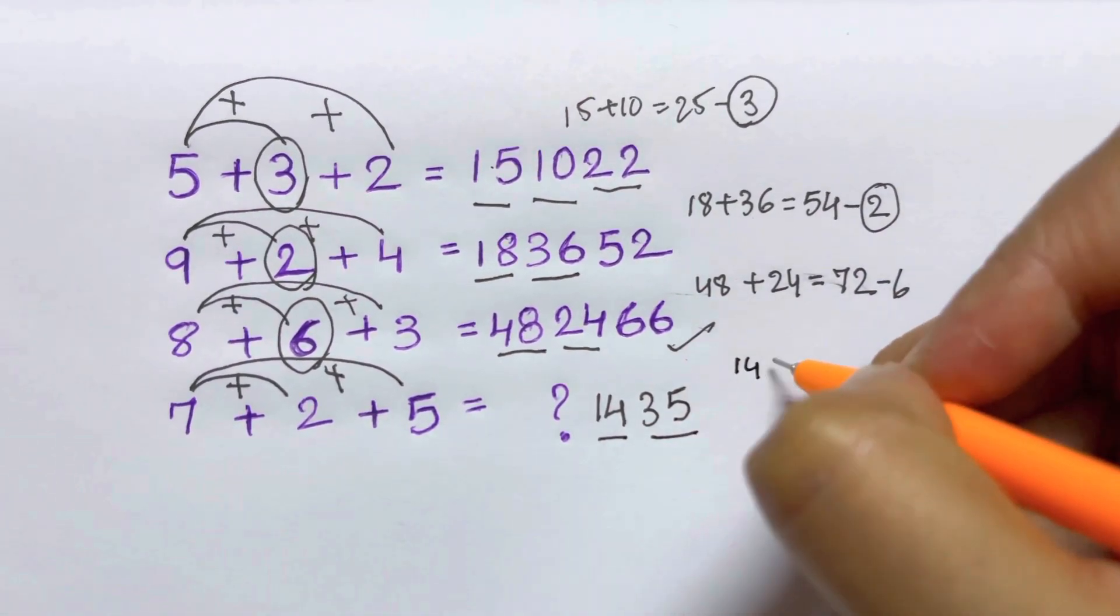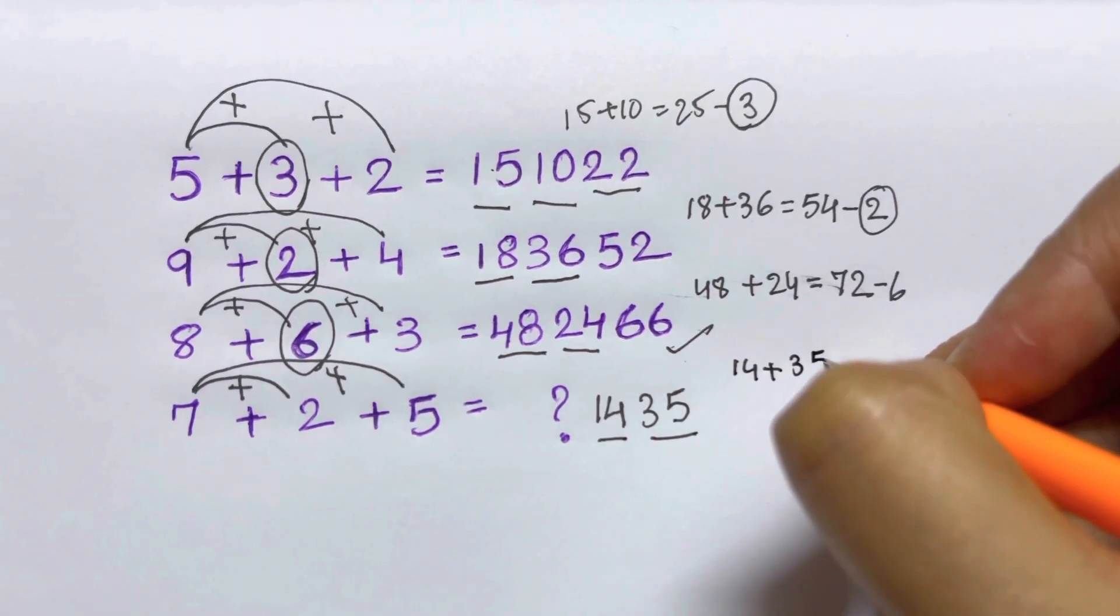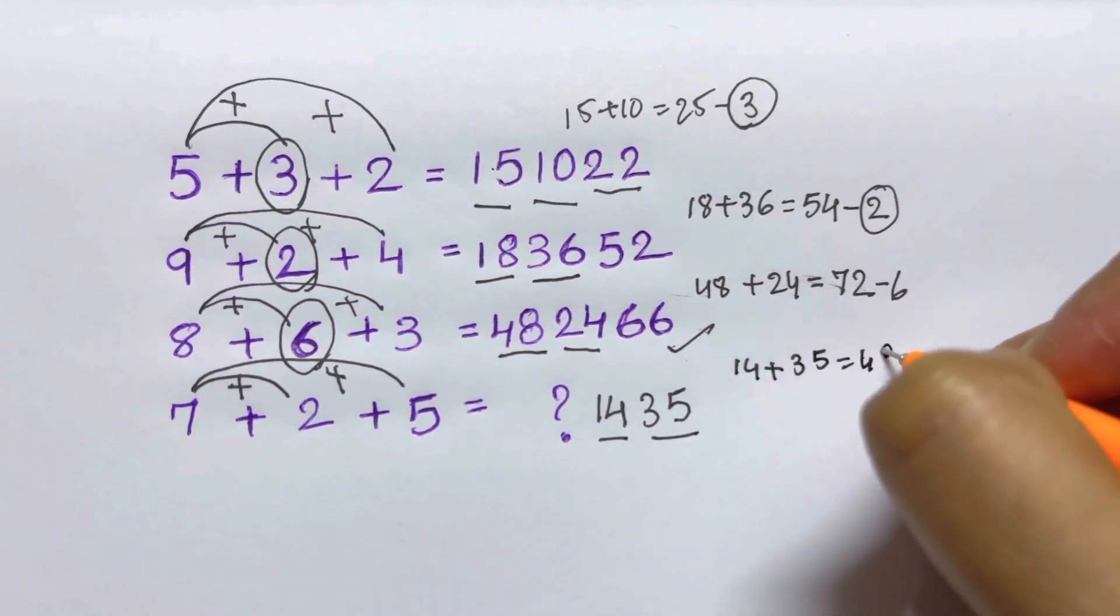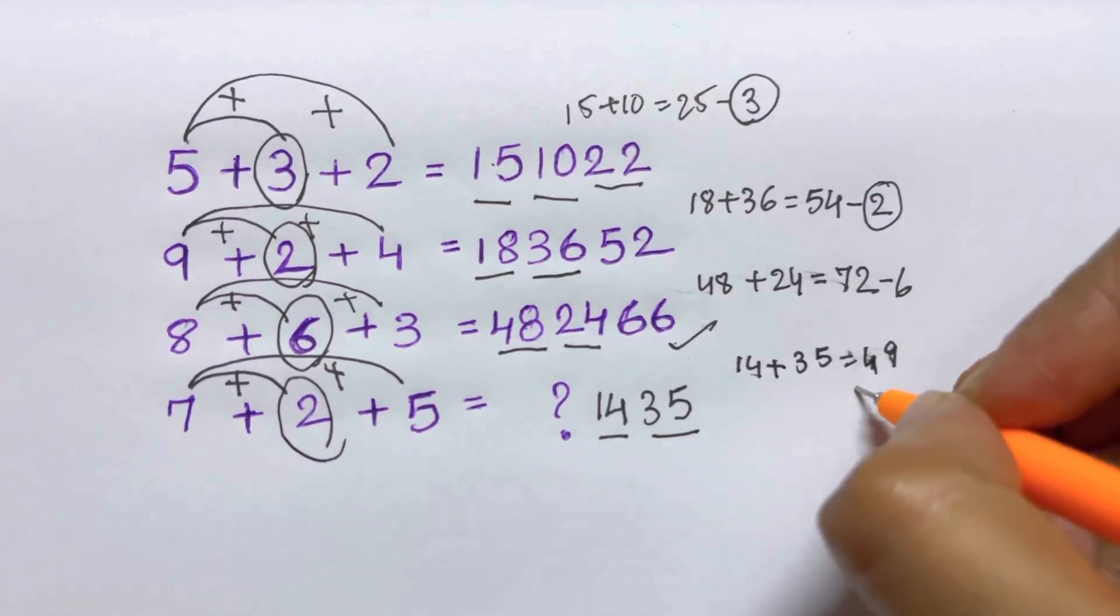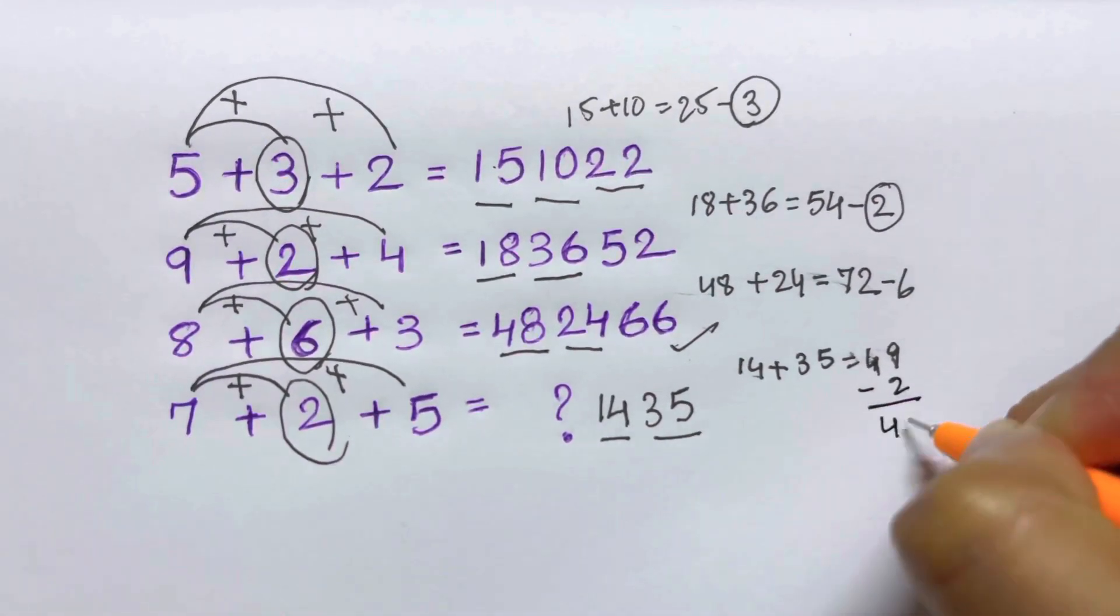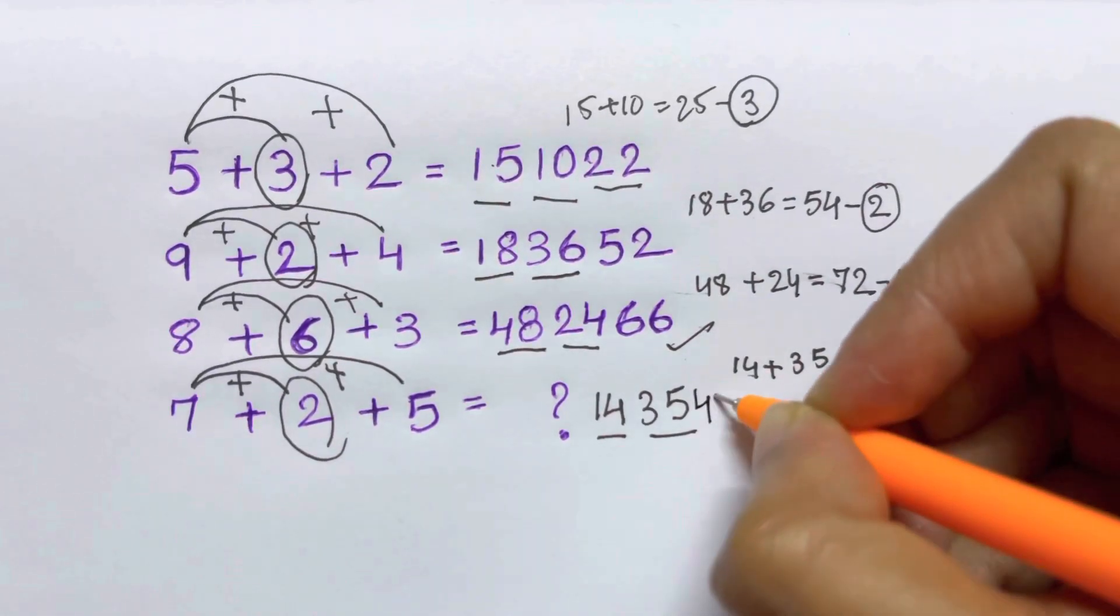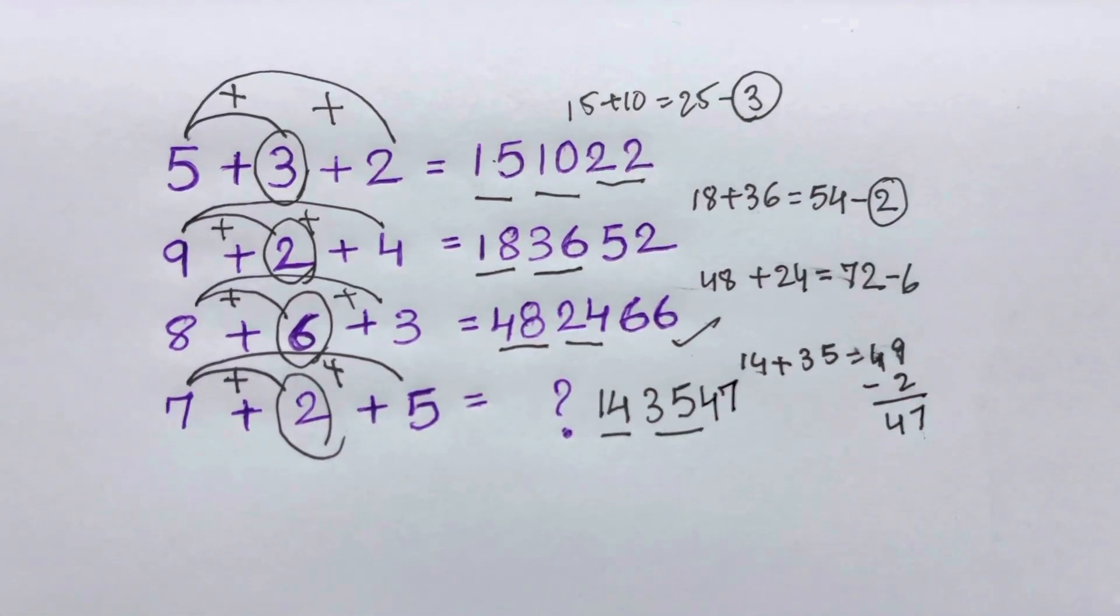14+35 will give me 49, and from 49 I'm going to subtract the middle number, that's 2, so that will just give me 47. So I'm going to write down 47, so my six-digit answer is 143547.